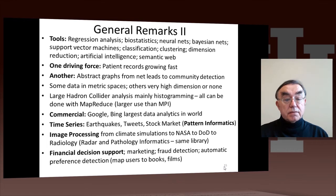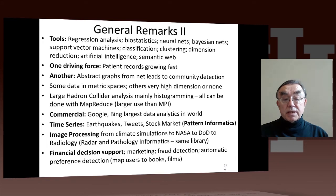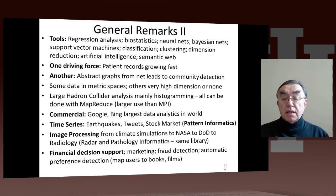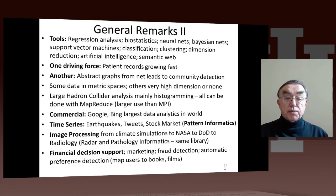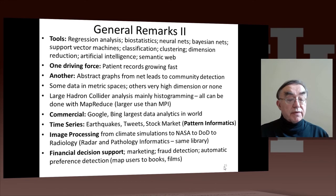The Large Hadron Collider uses mainly a rather simple approach — histogramming. It could use nifty technology like MapReduce, but that's typically not how it's done at the moment. In academia, MPI dominates as the message passing interface, a technology that allows parallel computing. But in the commercial world, MapReduce is of much larger importance, and if you look at parallel computing done in total, it's dominated by the commercial world of MapReduce. Google, Bing, Yahoo, and Amazon are the largest data analytics operations, and we need to learn from them.